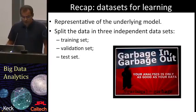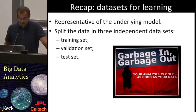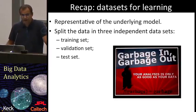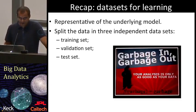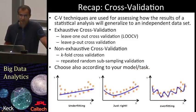We have also talked about the datasets needed to correctly train a classifier. To achieve better results and be able to generalize, we need to split our dataset into three independent ones: training, validation, and test sets. Training and validation are used during the learning phase, while the test set is used to assess the results of a fully trained classifier and provide an unbiased estimate of the generalization error. We have also seen the different cross-validation techniques that we can use to avoid overfitting.